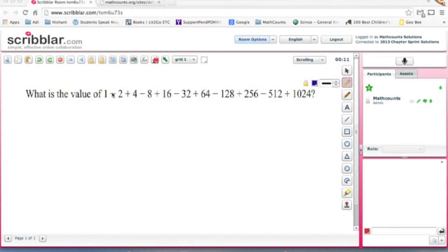Okay, so this is 2013 chapter sprint solutions number two. What is the value of 1 minus 2 plus 4 minus 8 plus 16 minus 32 plus 64 minus 128 plus 256 minus 512 plus 1024? All right, the way...